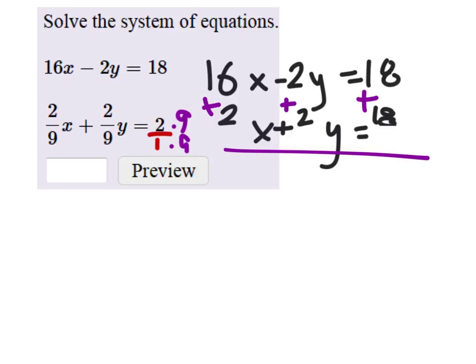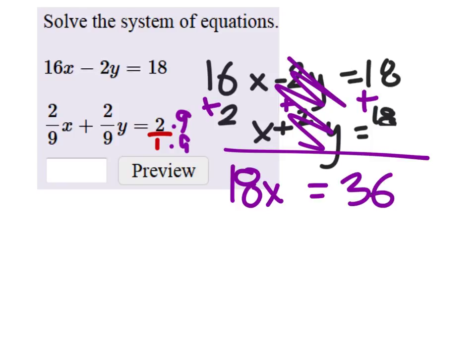We're going to add each column. So 16x plus 2x would be 18x. These eliminated, the y's. Negative 2y plus 2y is 0. And that equals 18 plus 18 is 36. So to solve for x, we'll divide both sides by 18. And we get x is 2.